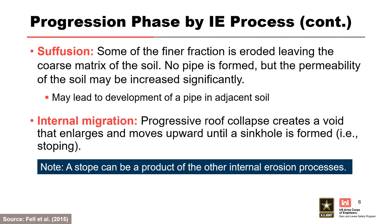For suffusion, some of the finer fraction is eroded, leaving the coarse matrix of the soil. No pipe is formed, but the permeability of the soil may be increased significantly. For internal migration, progressive roof collapse creates a void that enlarges and moves upward in the embankment until a sinkhole is formed, resulting in stoping. A stope can also be the product of other internal erosion processes.